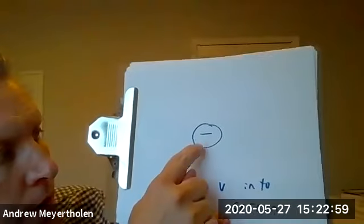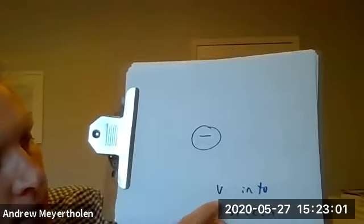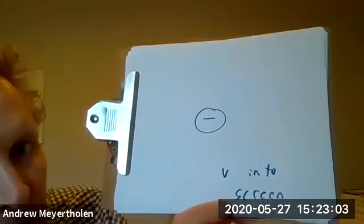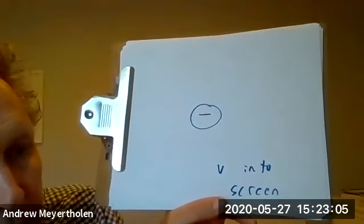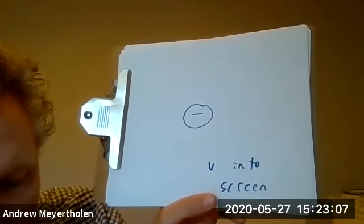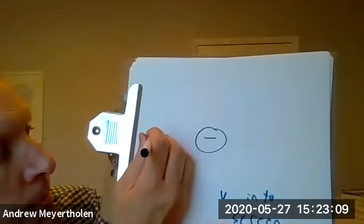And so we're told here is we have a negative charge that's velocity is going into the screen. And so we're trying to find the direction of the magnetic field over here. At this point, I'll call it P.